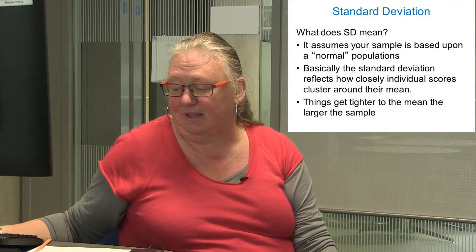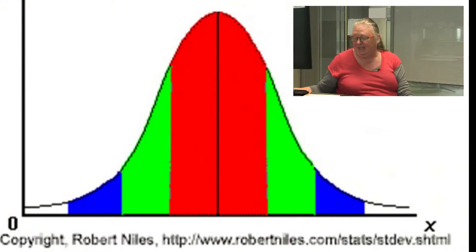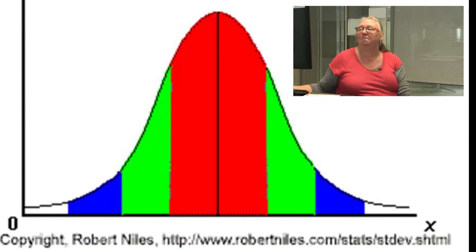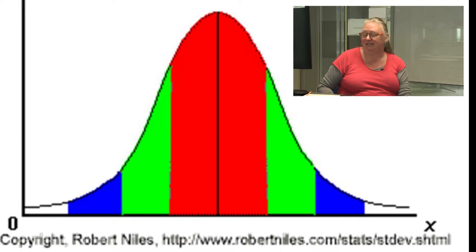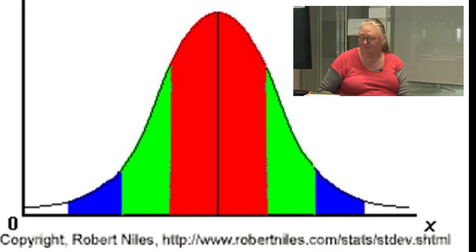You'll be familiar, I suspect, with the Gaussian curve. This is what standard deviation is talking about. It has two parameters: the mean, which is the thick black line up the middle, and the standard deviation from the mean, which is the coloured bars.